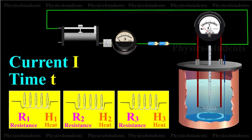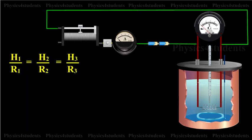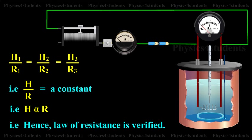It is found that H1 by R1 equals H2 by R2, that is equal to H3 by R3. So H by R equals a constant, hence the law of resistance is verified.